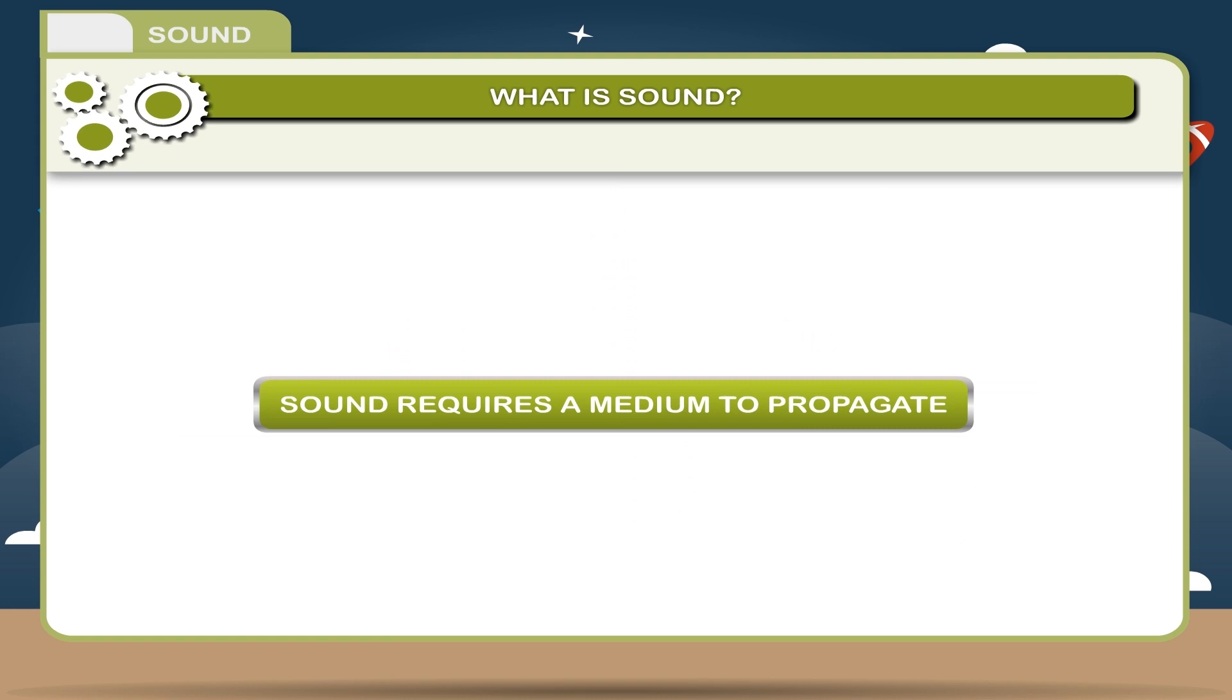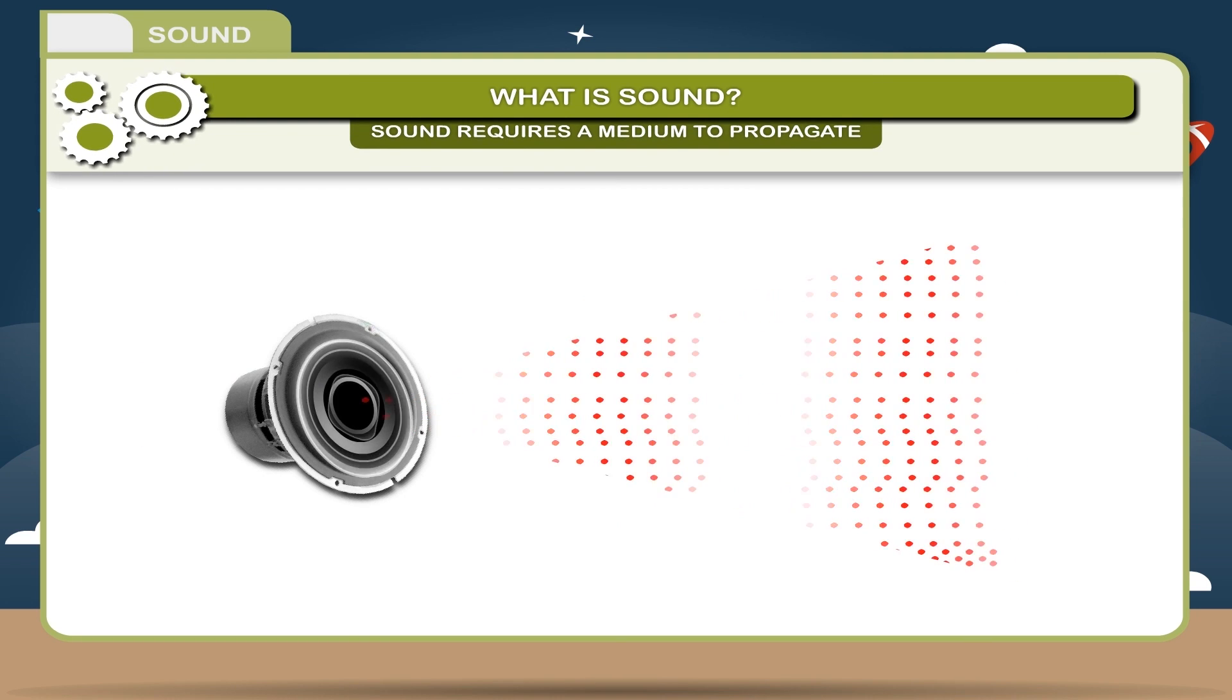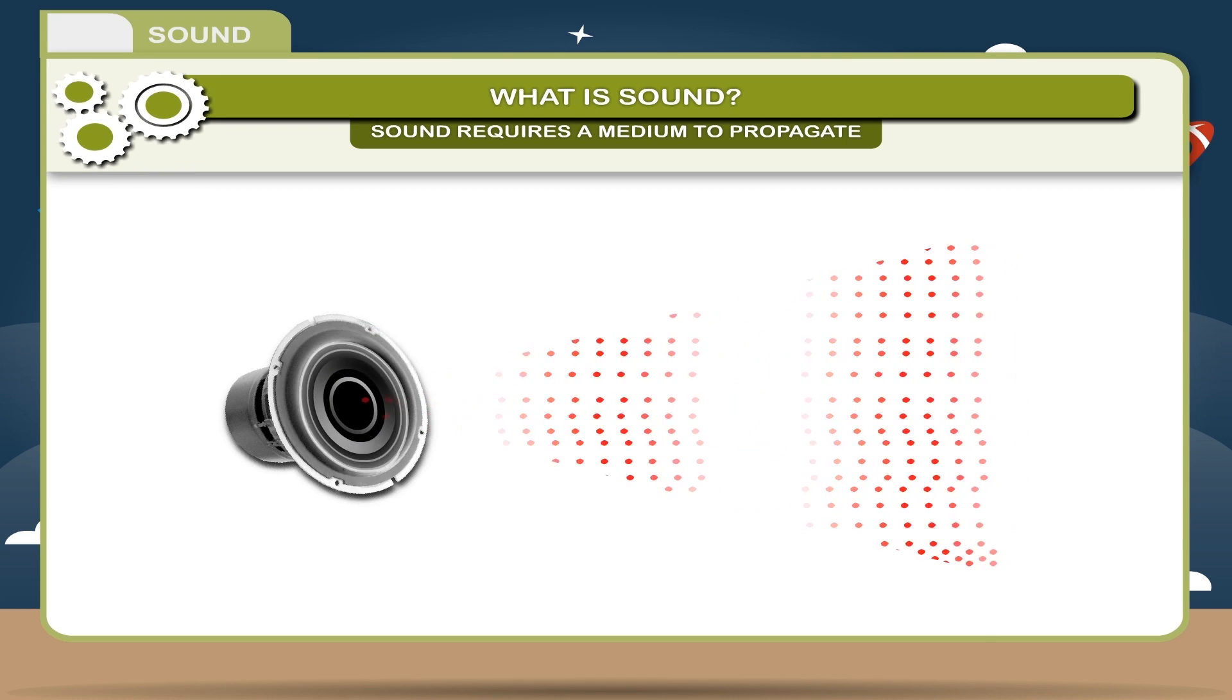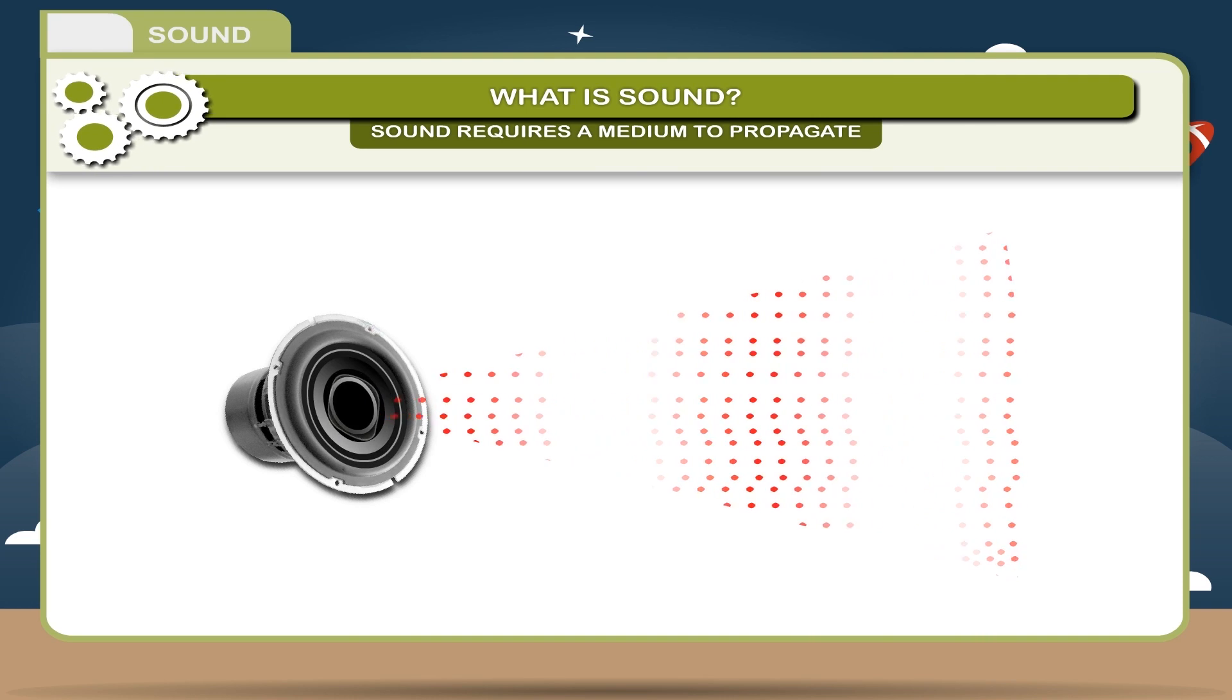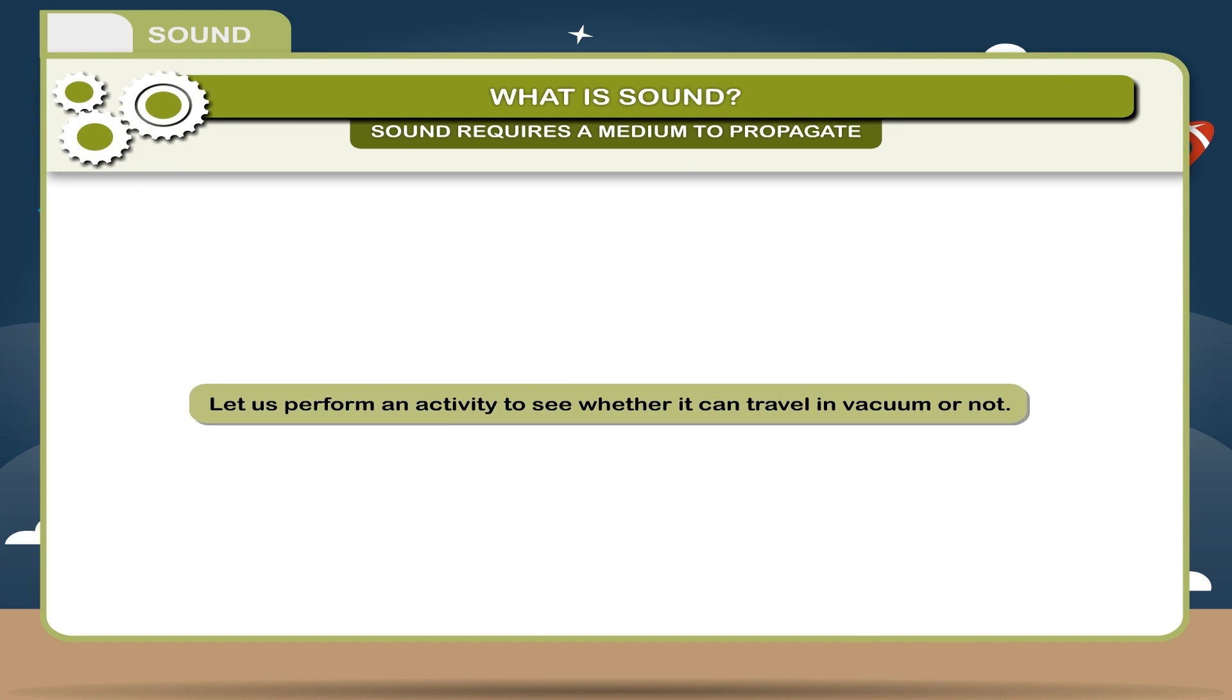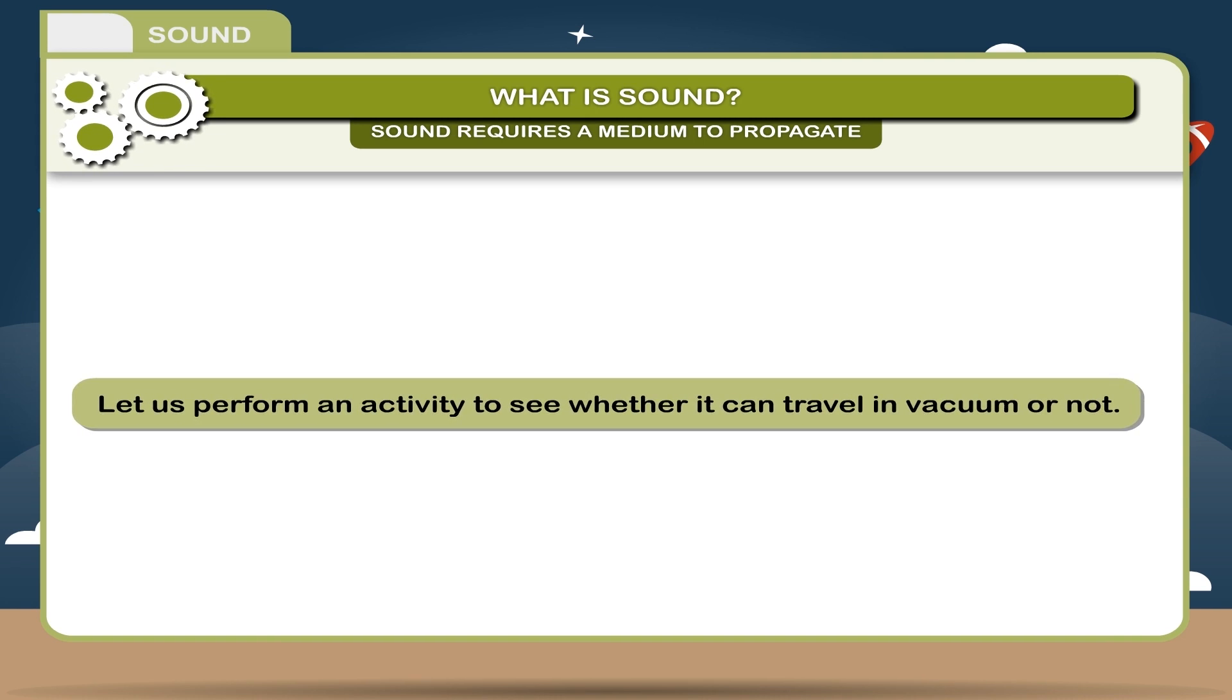Sound requires a medium to propagate. Unlike light, sound is the form of energy for which the medium is necessary. Since a vibrating object passes the vibrations to the air molecules, it means that the sound travels in a medium. Let us perform an activity to see whether it can travel in a vacuum or not.